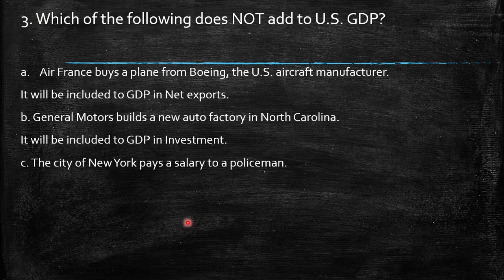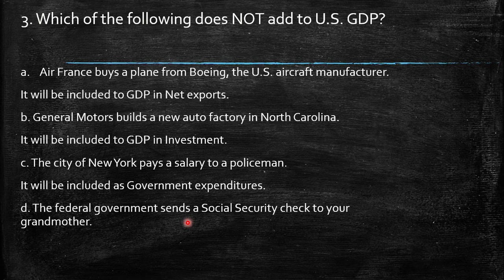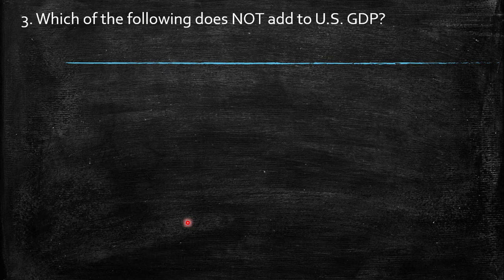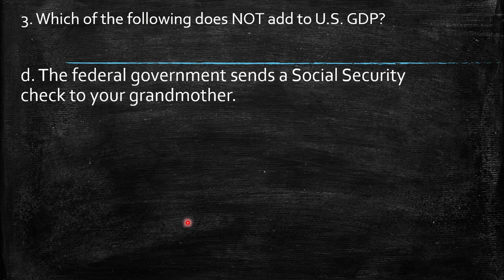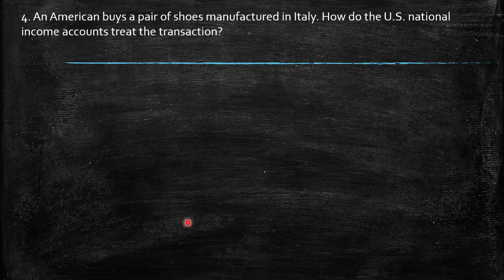The city of New York paying a salary to a policeman belongs to government expenditures in GDP. However, the federal government sending a Social Security check to your grandmother does not add value to GDP — it actually subtracts rather than adds. Social Security payments are considered transfer payments, functioning like a subsidy.